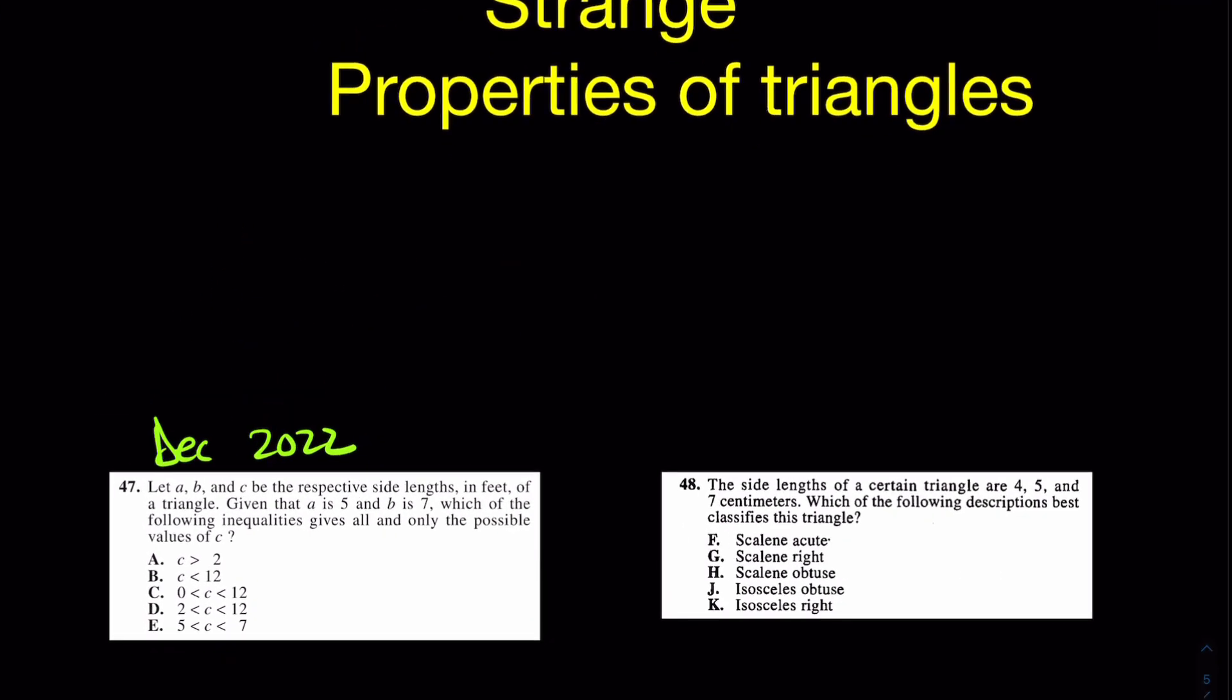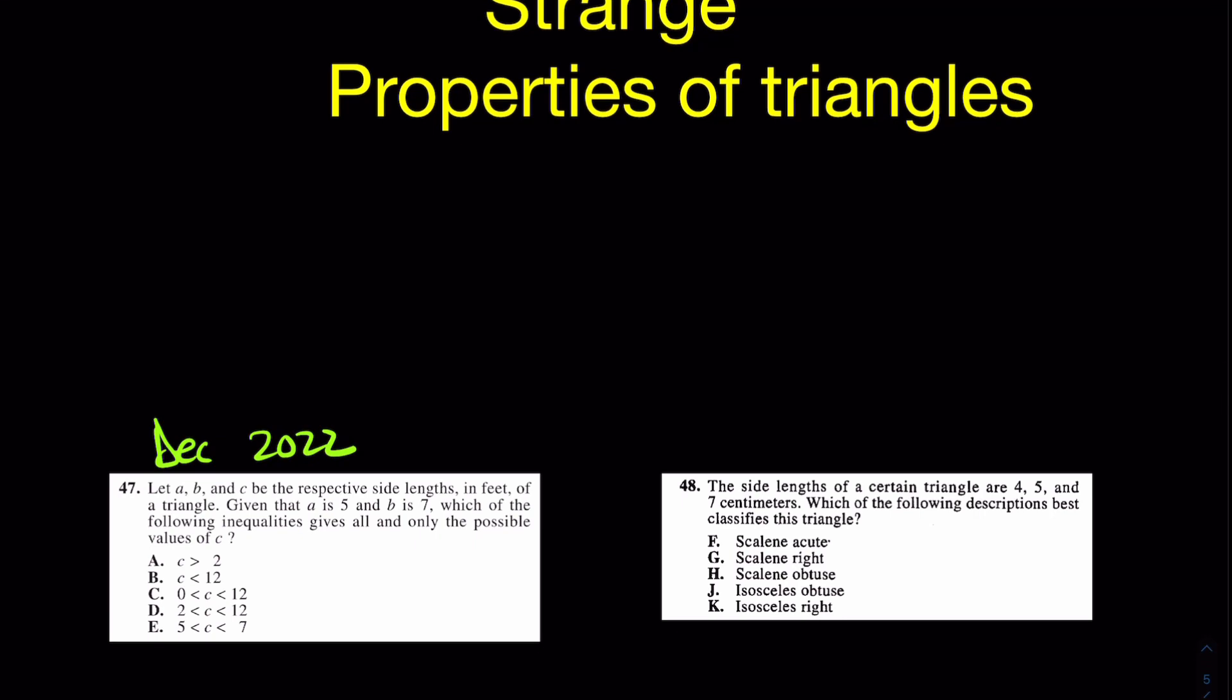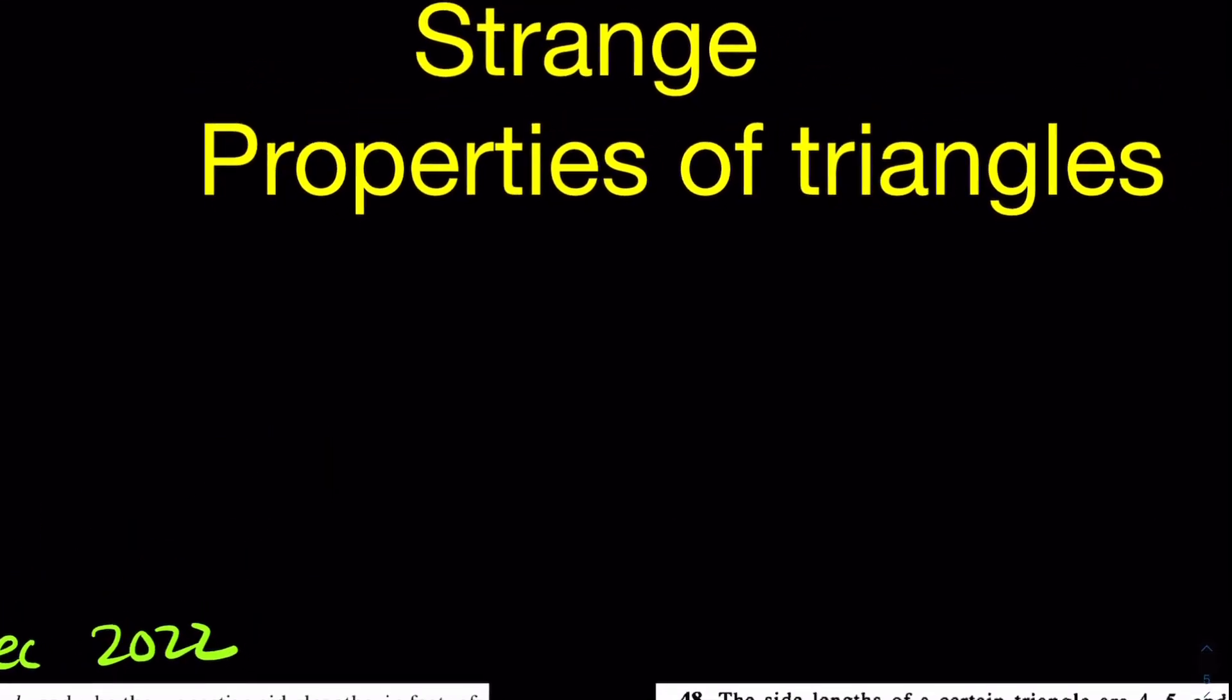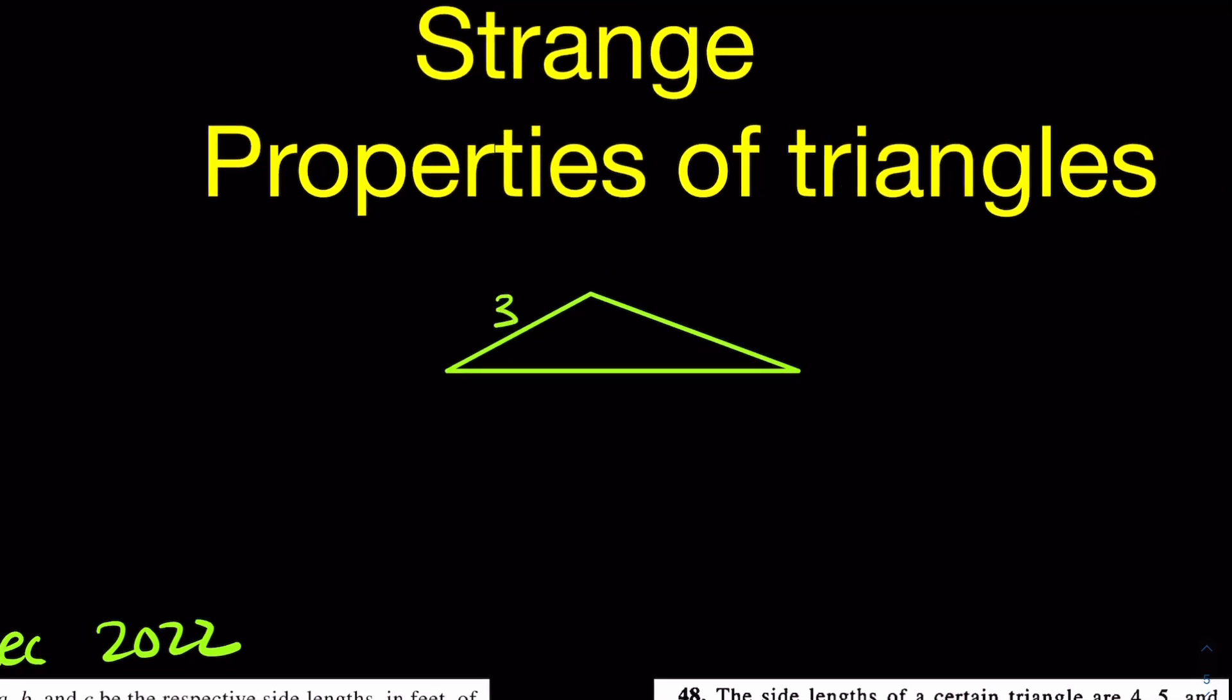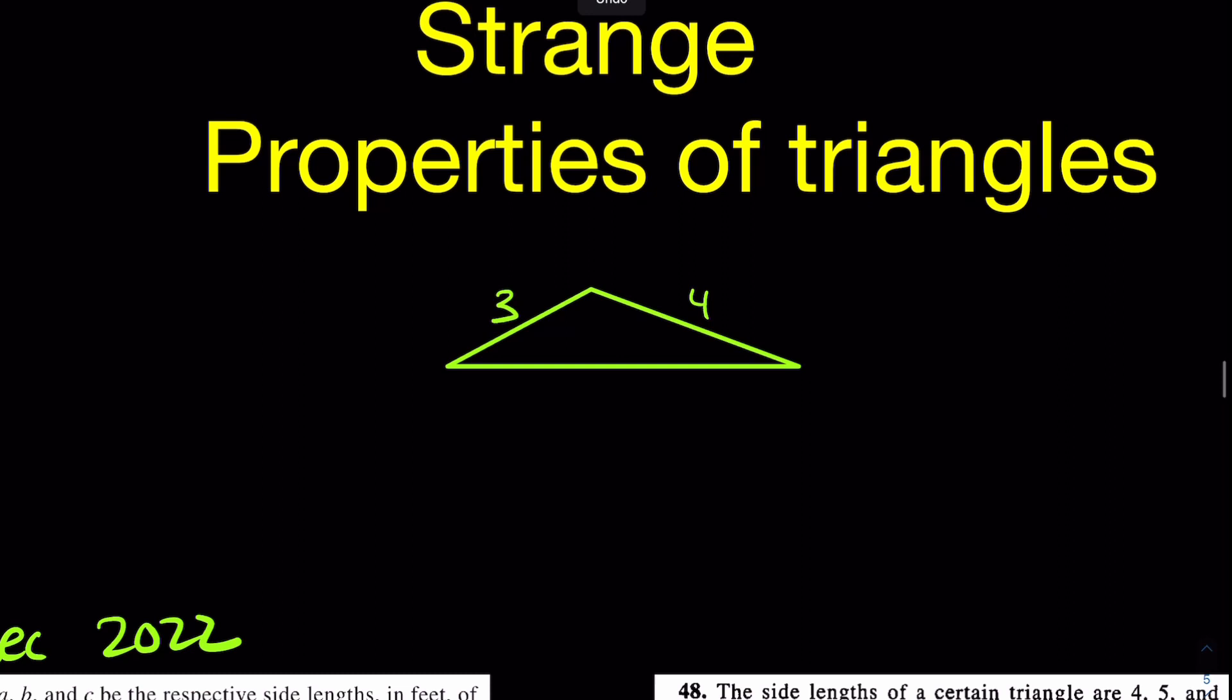Let's take a look at this property and I'll try to teach it first, then we can try to apply it. So this weird property of triangles goes like this: if I have this triangle here and I told you that this was, I don't know, 3 and this was 4, what could this side be? What are some possibilities? In other words, could this side be 8?